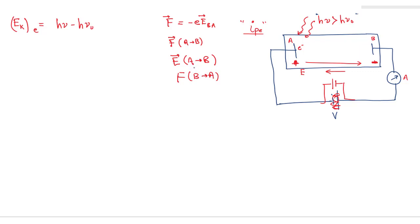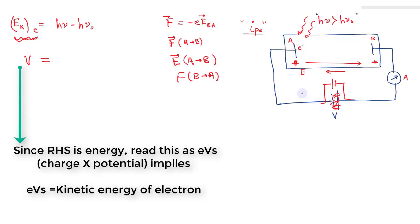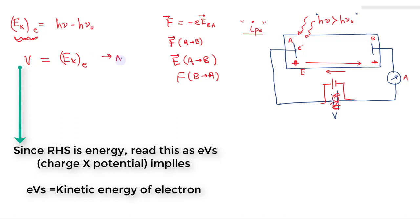The electron tries to move from A to B due to the kinetic energy gained from photoelectric emission, but the external reversed field tries to push the electron from B to A. At a particular potential, when the battery's retarding energy equals the kinetic energy of the electron, the forces are balanced. No electron can pass from A to B, and there will be no photo current.